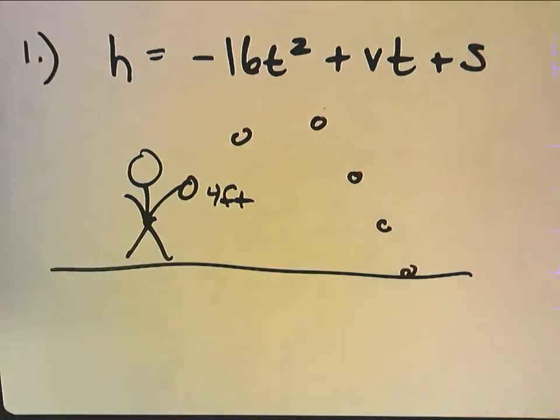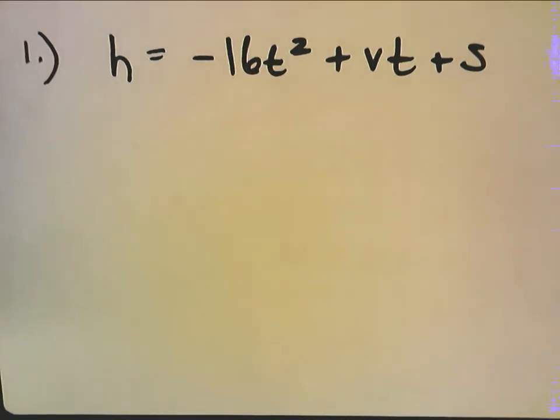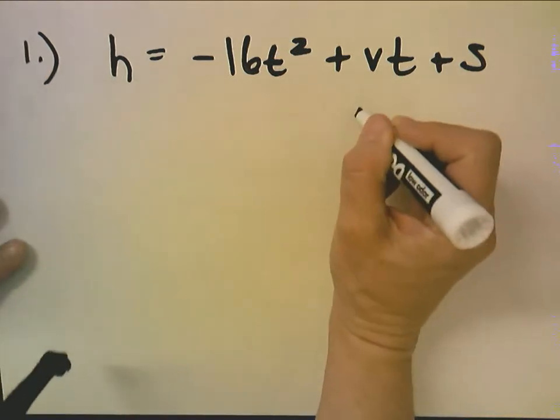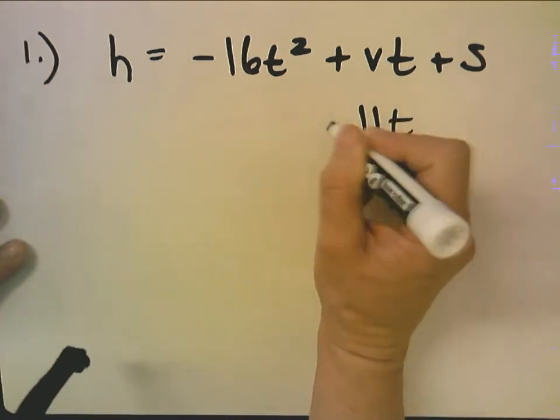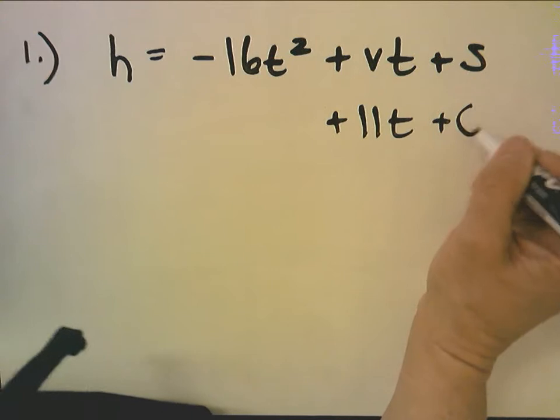So this problem says a cat leaps from the ground into the air with initial vertical velocity of 11 feet per second. So I know v equals 11. Now the cat leaps from the ground so that means the starting height was zero.